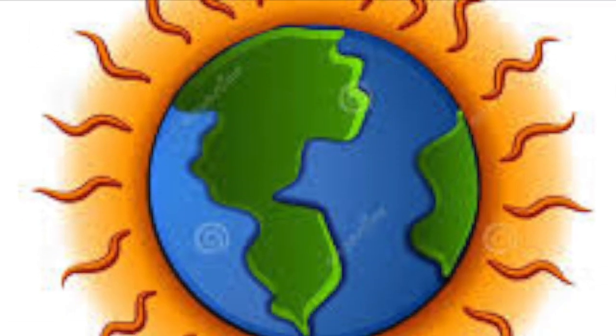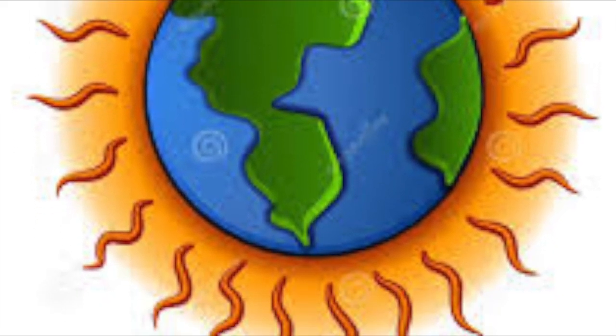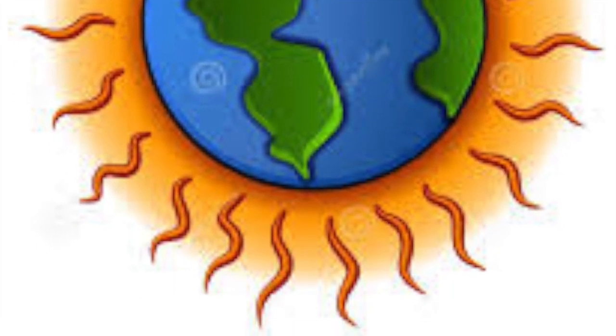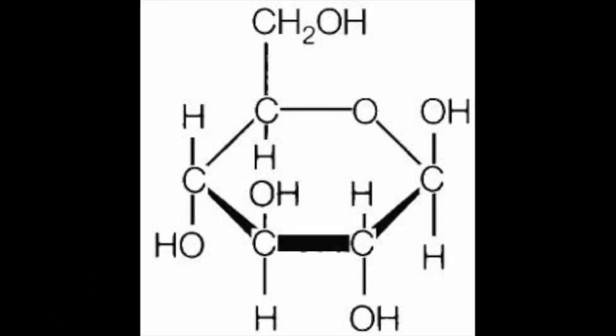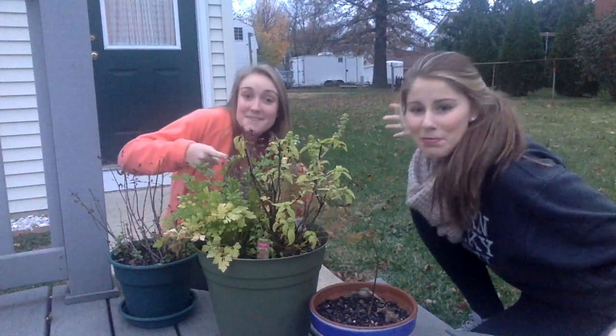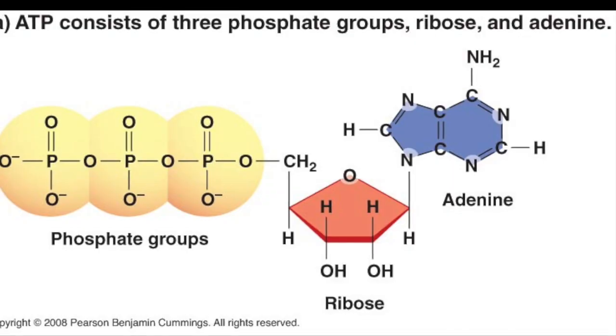Solar energy, which is now chemical, is used to make glucose. Now we're gonna get technical — take it to the plants.